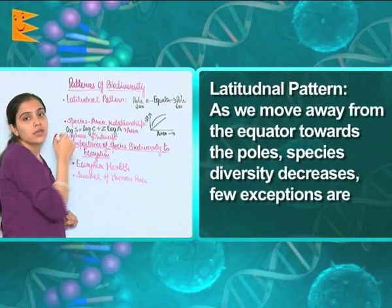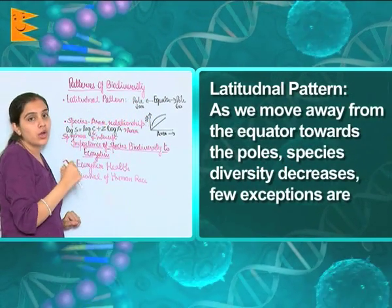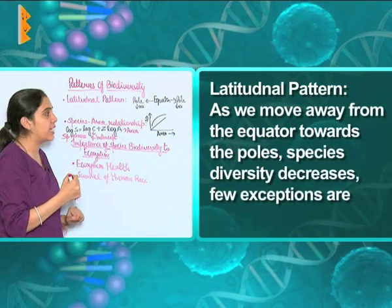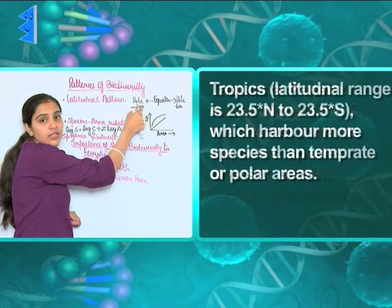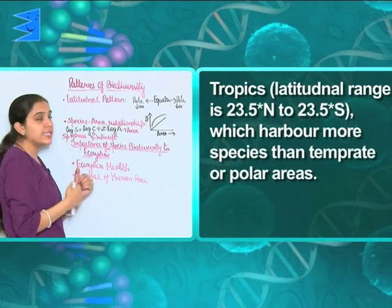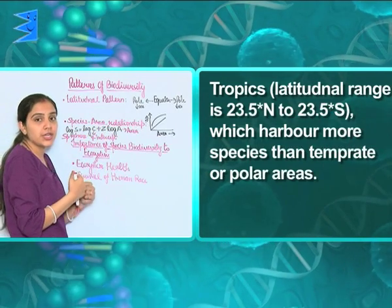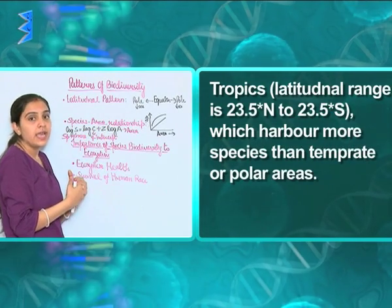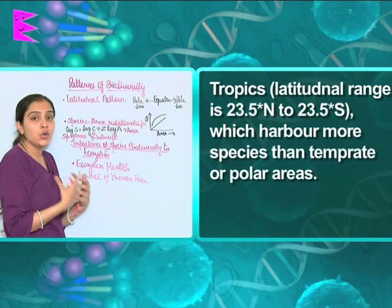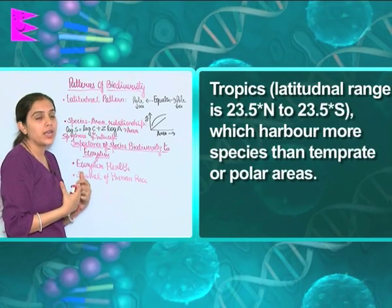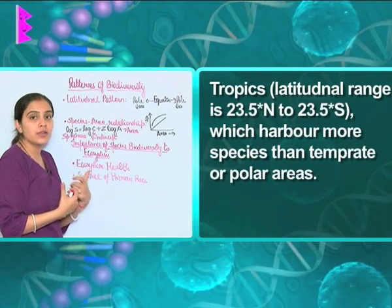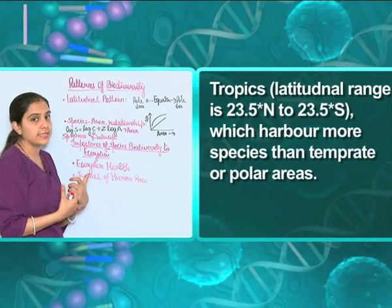The temperature does not support the growth or sustenance of plants and animals towards the poles. Whereas in the tropical areas, seasonal variation is limited, temperature is supportive, and a good amount of solar energy is available for the growth and sustenance of plants and animals.